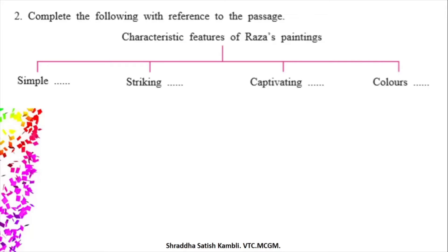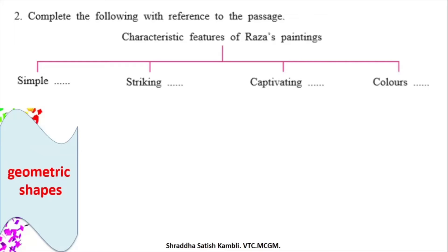Let us look at the second exercise, which is based on comprehension. If you have read and understood the passage, you will surely be able to do this exercise. Check with your textbooks and try to arrive at the answers, then check with mine. What are the characteristic features of Raza's paintings? They are simple — they use geometric shapes. Geometric shapes are a very simple concept: the circle, the square, the triangle, which we have been learning since a very young age.